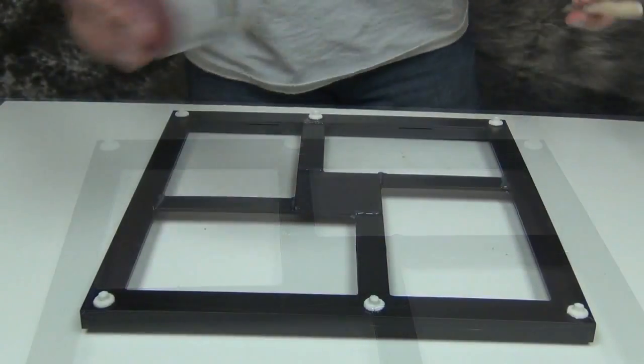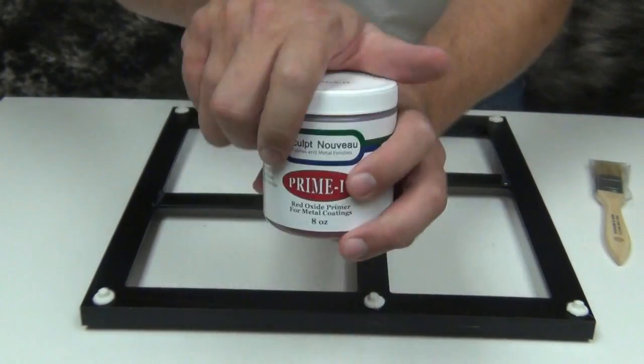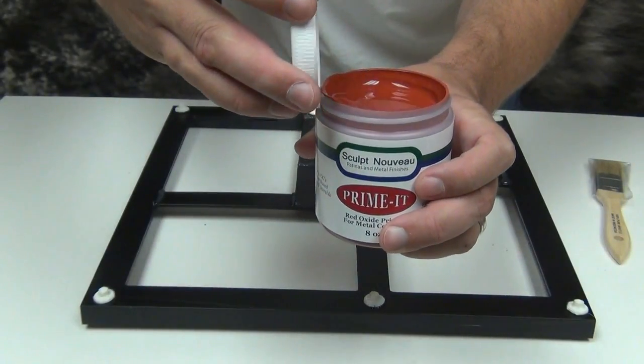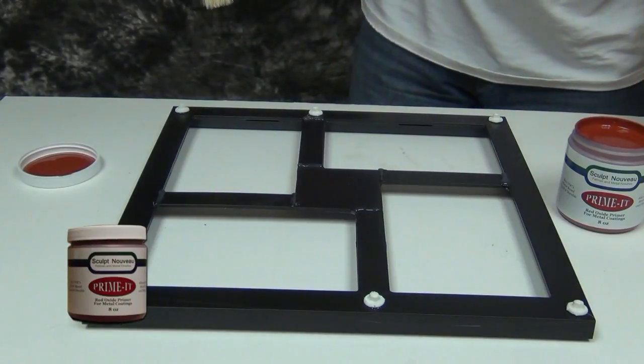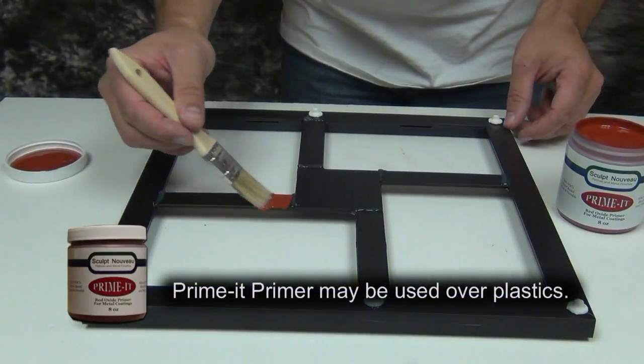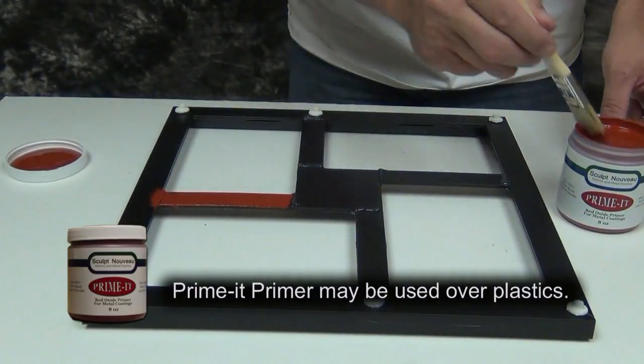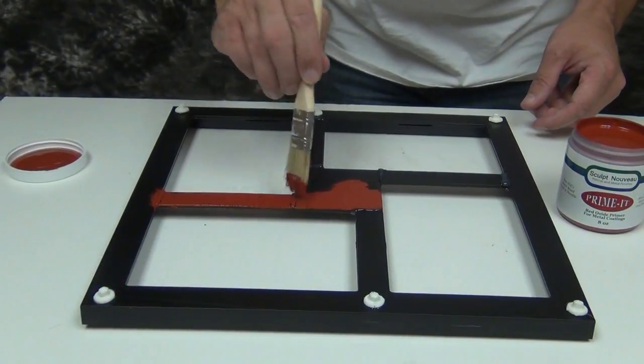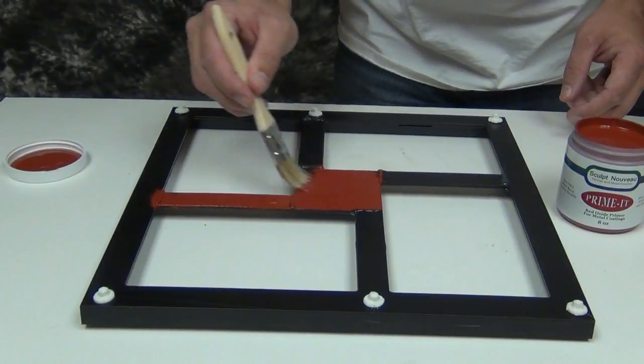Once our screw heads are in place, we're ready to start applying our primer. This is the Primit primer, and this is a very crucial stage you don't want to skip because Primit primer bonds incredibly well to plastic surfaces. A good coat or two over your plastic surface will give you that much more insurance that your metal coating is going to stay put.